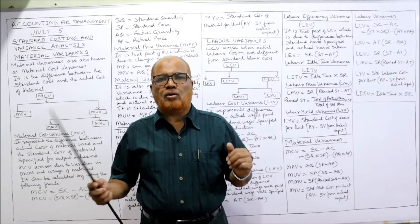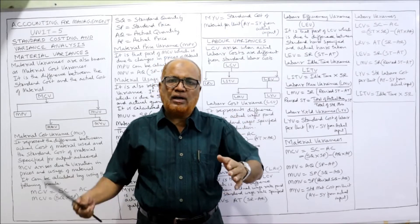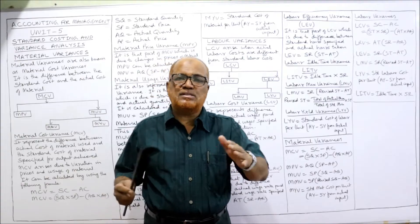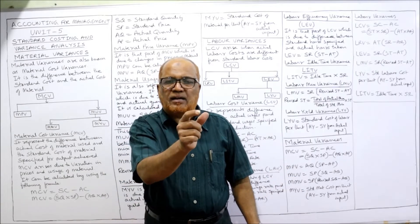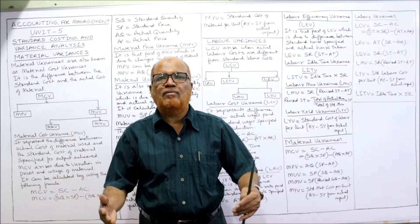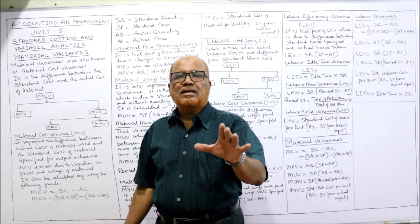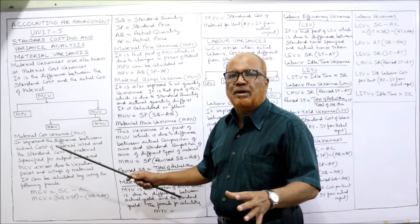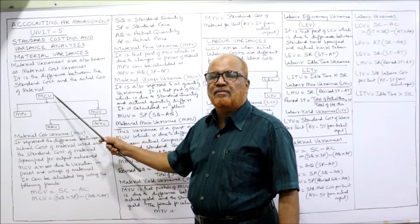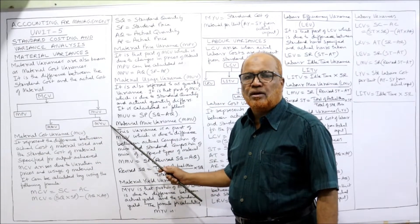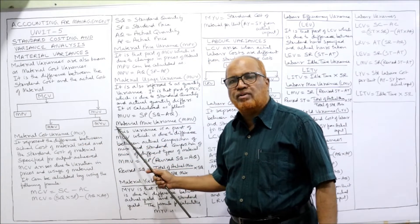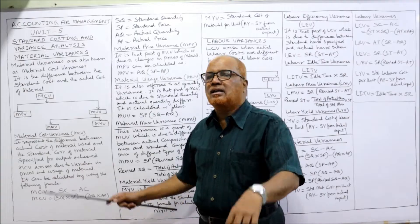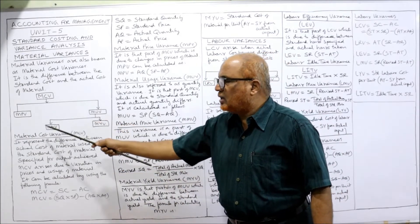First we predetermine the material cost — that is called standard material cost. Later on, when we actually pay for material, the actual material cost may be different from the standard material cost. The difference between the standard and actual material cost gives rise to material variances. Material cost variance can be divided into material price variance and material usage variance. Material usage variance can be further divided into material mix variance and material yield variance.